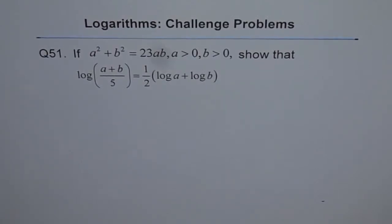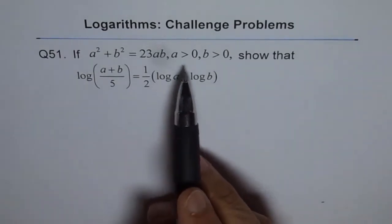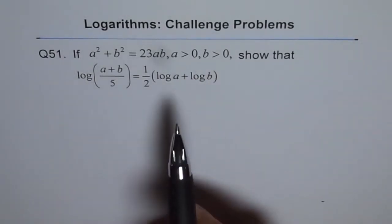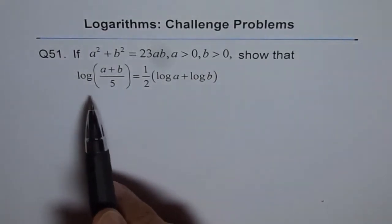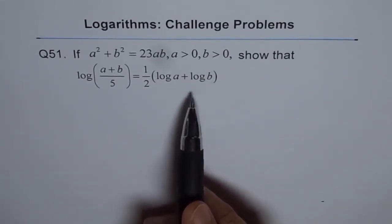Question 51. If a square plus b square equals 23ab, where a is greater than 0 and b is greater than 0, show that log of a plus b divided by 5 equals half of log a plus log b.